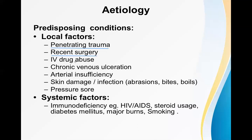IV drug abuse in the area where they are injecting the drug may be a predisposing condition. The common sites for IV drug abuse include the elbow area, thigh, or wrist. Chronic venous ulceration is also a predisposing factor — venous ulcers are quite common after varicose veins, where dilated and tortuous veins can cause ulceration of the overlying skin, which may be a predisposing site for necrotizing fasciitis.